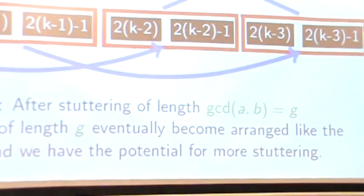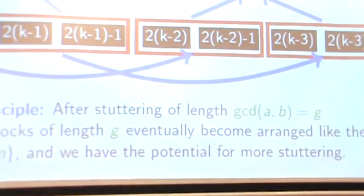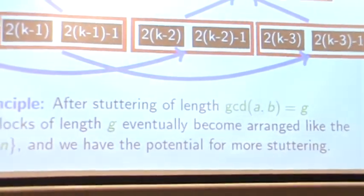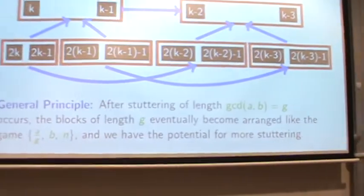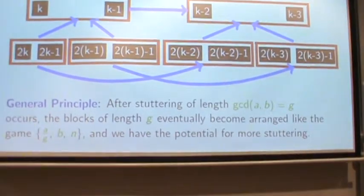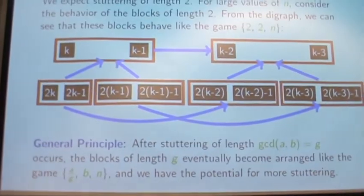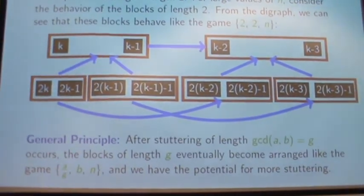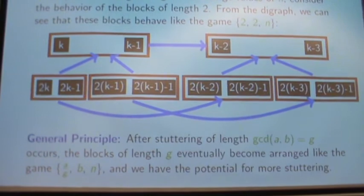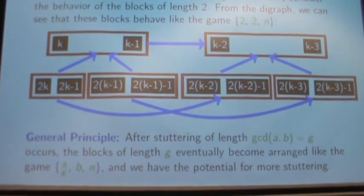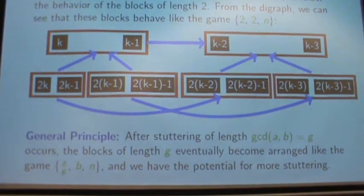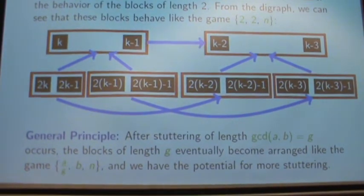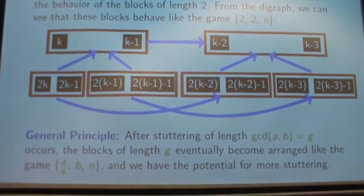This kind of nested repetition continues in general — it's not something special about subtracting by 2. As long as we keep getting these GCDs between what we're subtracting by and what we're dividing by, we're going to keep having this behavior and keep being able to reduce what we're subtracting by.